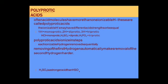Examples: monoprotic — hydrochloric acid; diprotic — sulfuric acid; triprotic — phosphoric acid. Polyprotic acids ionize in steps, with each ionizable hydrogen removed sequentially. Removing the first hydrogen automatically makes removal of the second hydrogen harder.